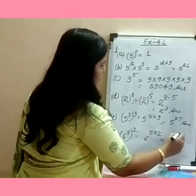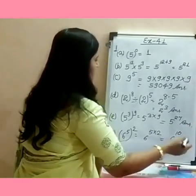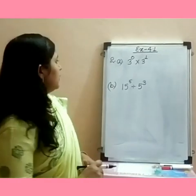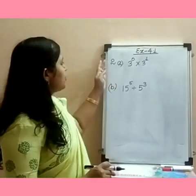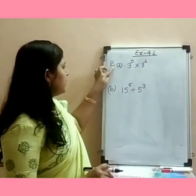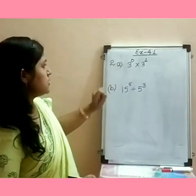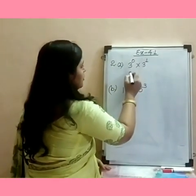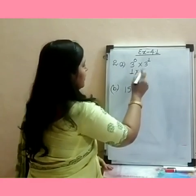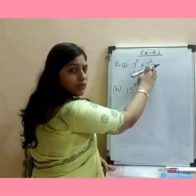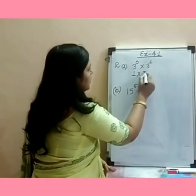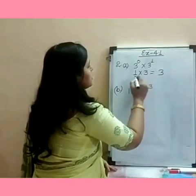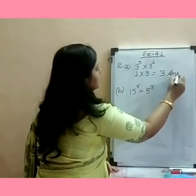Exercise 4.1, Question 2a and 2b. Question 2a: 3 raised to the power 0 — since any number to the power 0 equals 1, the answer is 1. And since any number to the power 1 equals the number itself, 3 raised to the power 1 equals 3. So the answer is 3.